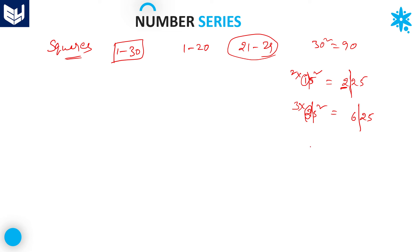Similarly, for 65 squared: the number ends with 5, so the last two digits are 25. Then 6 multiplied by its next number — 6 × 7 = 42. So 65 squared is 4225. This is the shortcut method to get the squares of numbers ending with 5.